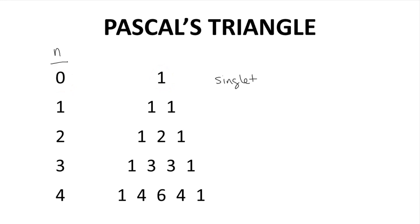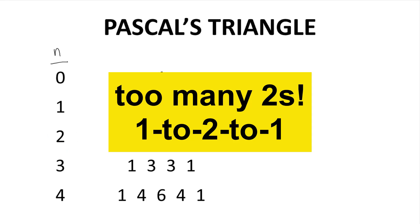If a hydrogen has one neighbor, the signal for that hydrogen will have two peaks with a relative intensity of one to one, a doublet. Two neighbors, the signal will be three peaks with a relative intensity of one to two to one, a triplet.